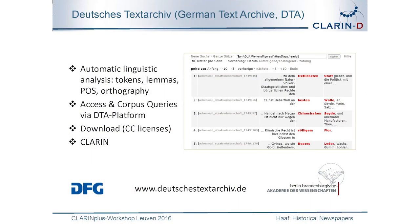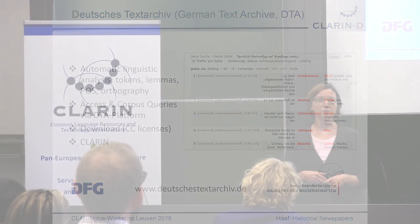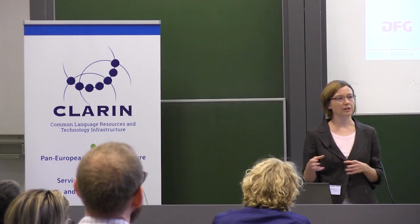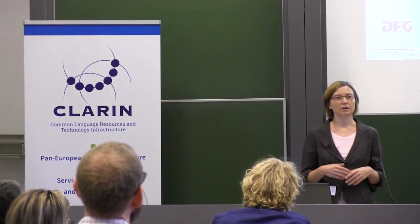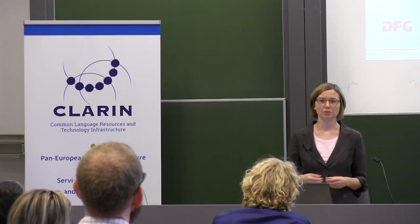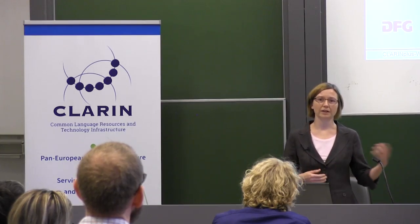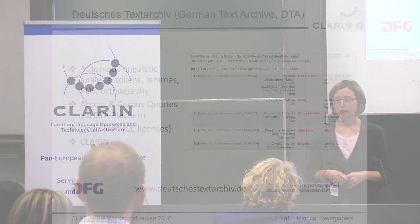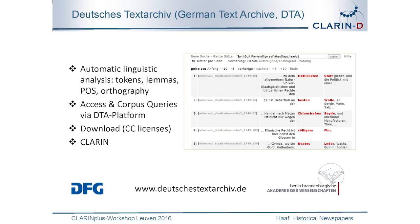There are automatic linguistic annotation steps like tokenization, lemmatization, part-of-speech tagging, and orthographic normalization, which means we normalize the historical spelling variants so that you can research the corpus with the modern spelling and get all the historical forms. You can access the text through our platform.